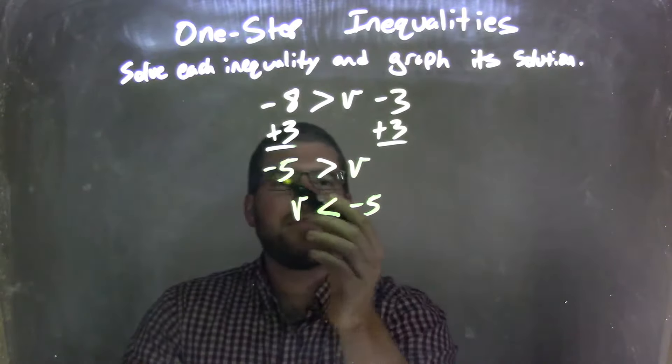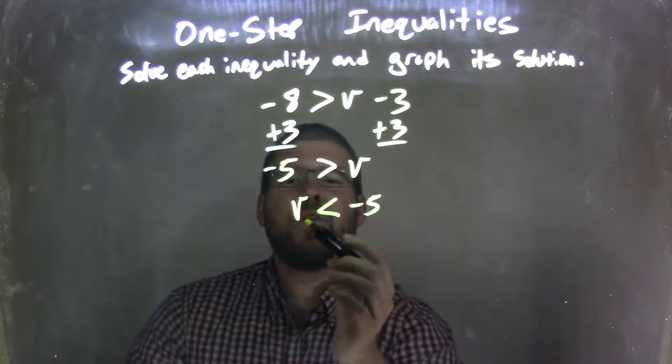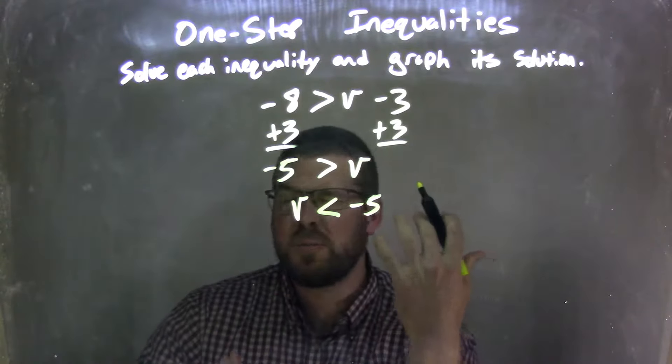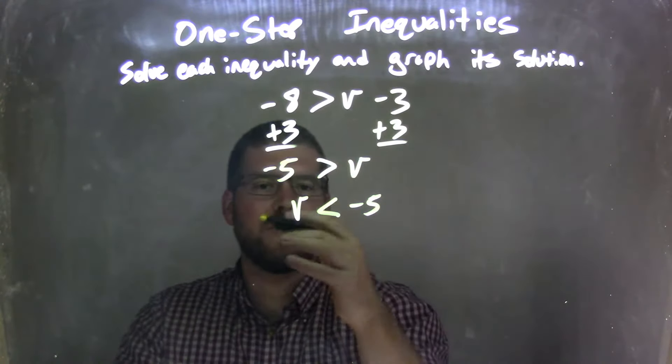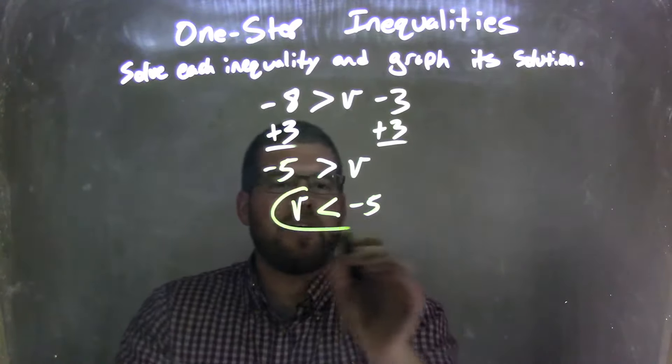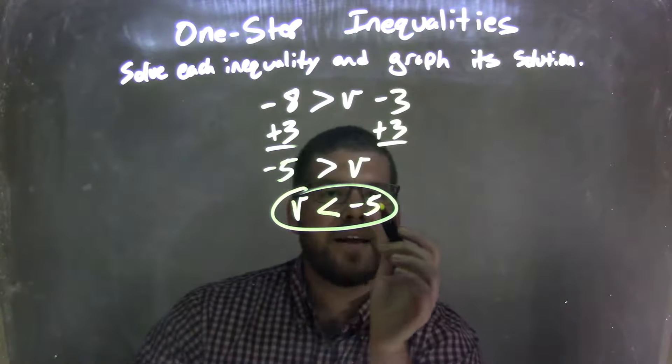That leaves me, instead of negative 5 is greater than v, I have v is less than negative 5, which both are really the same answer, or same statement. And so we have our final answer here of v is less than negative 5.